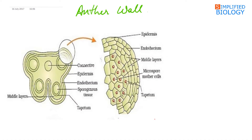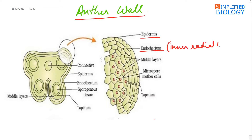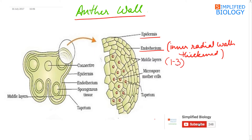The wall of the anther is a many-layered structure. The outermost layer is the epidermis, inner to which lies the endothecium. The inner radial walls of the endothecium are thickened — fibrous thickening can be seen — and it is the main protective layer of the anther. Inner to the endothecium are one to three middle layers, the cells of which get crushed by the time the spores are formed.